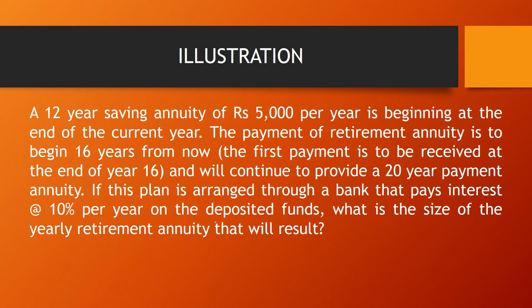The question asks: what is the size of the yearly retirement annuity that will result? You have taken a saving plan from the bank in which you are depositing 5000 rupees every year. The first deposit is exactly after one year — that means if today is the current year, your first deposit is at the end of year one. You are depositing every year for 12 years, meaning there is an outflow from your pocket for 12 years. After 12 years the bank keeps your money and pays it back as your retirement plan starting from the end of the 16th year, continuing for 20 years. You have to find out the amount you are going to receive as a retirement plan benefit.